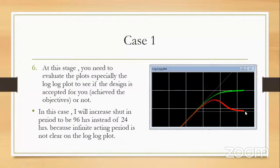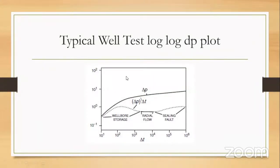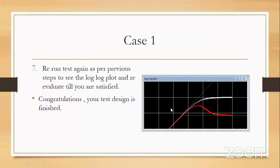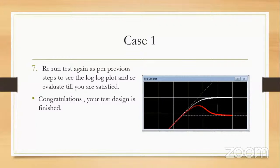This is the typical oil test log-log plot showing delta P and its derivative — the wellbore storage area, then radial flow, then possibly a boundary effect. I will enter 96 hours instead of 24 in the design window and click Generate again. Now when I rerun and extract the DB, I can see the horizontal line representing the radial flow or infinite acting period, from which I will get the permeability. I have now finished my test design and will send it to the production engineers to execute in the field. This is the end of Case 1.